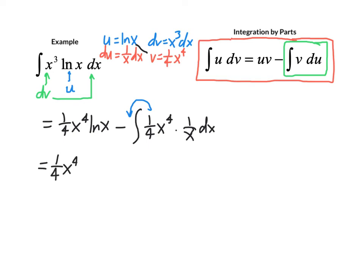So that gives us 1 fourth x to the fourth natural log minus 1 fourth times the integral of x to the third dx.